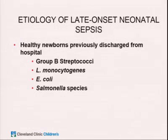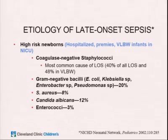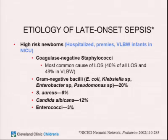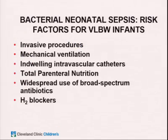For late onset sepsis, healthy previously-discharged babies have bugs similar to early onset: Group B Strep, Listeria, E. coli, and always consider Salmonella — especially with a pet lizard or infected household contact. However, for high-risk preemies in the NICU, multiple studies show coagulase-negative staph is the most common cause, accounting for at least 40%. Gram-negatives such as E. coli, Klebsiella, Enterobacteriaceae including Pseudomonas, and Staph aureus are also common. Candida causes about 12%. A PICC line and prematurity are key risk factors.